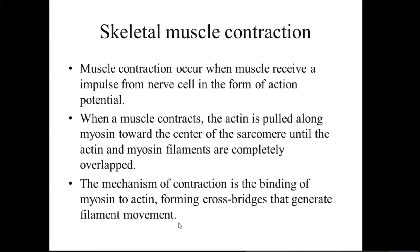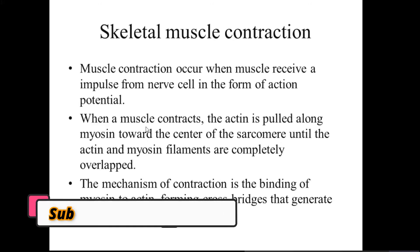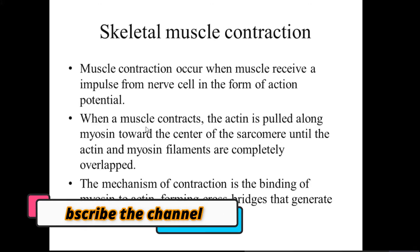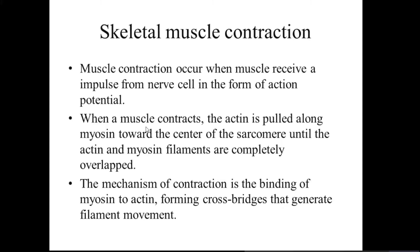Muscle contraction occurs when a muscle receives an impulse from nerve cells in the form of an action potential — the activation step discussed earlier, triggered by a signal from the nervous system to the neuromuscular junction. After the muscle receives this signal through receptors on muscle cells, the sarcoplasmic reticulum is stimulated and releases calcium ions for attachment to troponin.